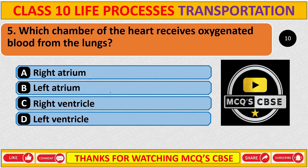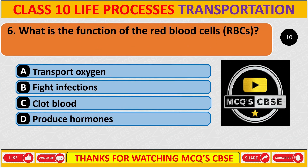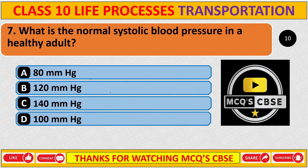Which chamber of the heart receives oxygenated blood from the lungs? The correct answer is B: left atrium. What is the function of red blood cells (RBCs)? The correct answer is A: transport oxygen.